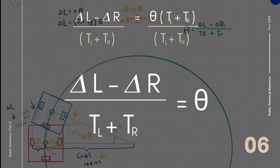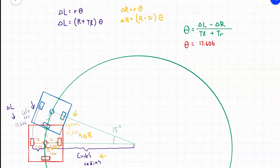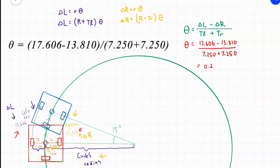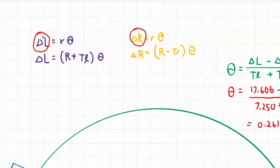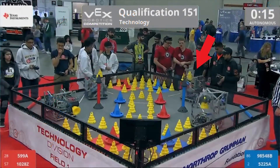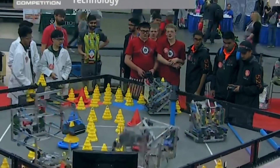Let's test this with our example. Theta equals 17.606 minus 13.810, divided by 7.25 plus 7.25, which equals 0.2618 radians — and when converted to degrees, that's 15 degrees, exactly as expected. So if you just know how far each tracking wheel has moved, you can find the orientation of the robot anywhere on the field, since robot motion is just a lot of these arcs combined. Instead of calculating relative orientation based on previous orientations, you can use the absolute quantities delta L and delta R to calculate it as an absolute quantity, regardless of what movements the robot has done before. Because of this, we can adjust for past errors and correct our future movements.